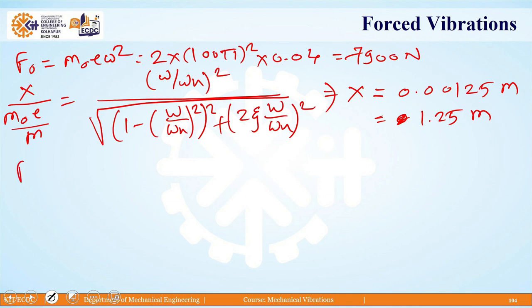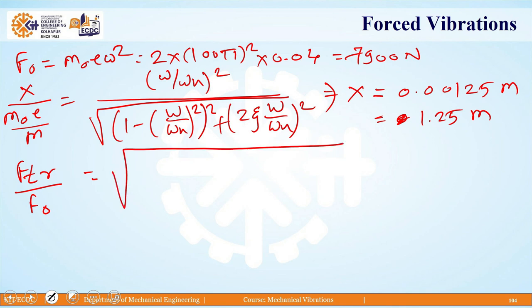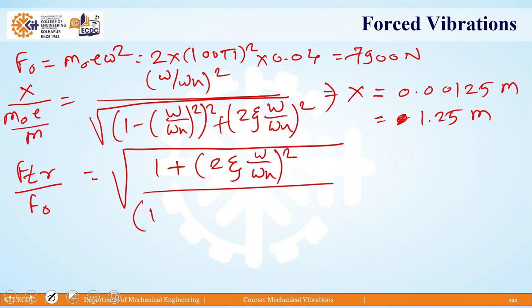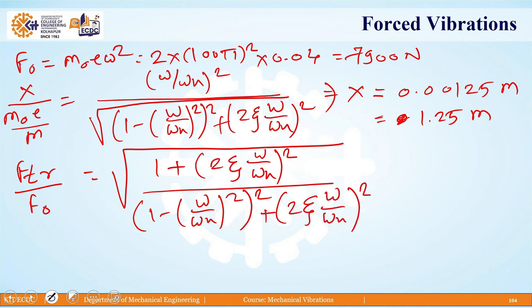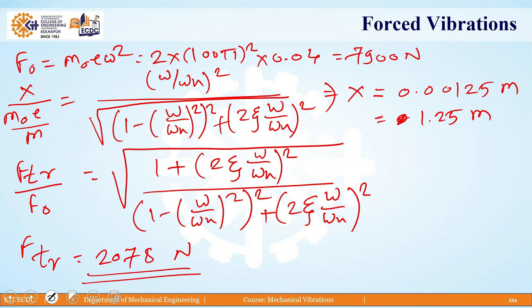For the force transmitted value, we use: F_tr divided by F₀ equals the square root of [1 + (2ζ ω/ωₙ)²] divided by [(1 − (ω/ωₙ)²)² + (2ζ ω/ωₙ)²]. Putting in all the values, we get F_tr as 2078 Newton. This is how we obtain the steady-state vibration amplitude and the force transmitted to the ground.